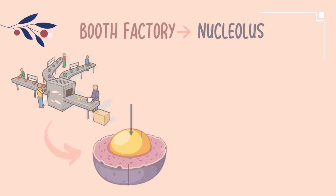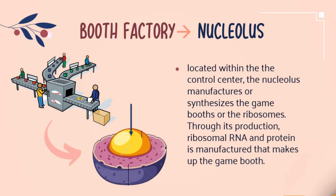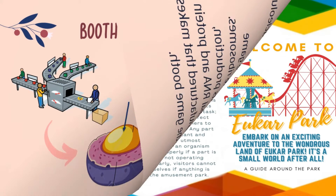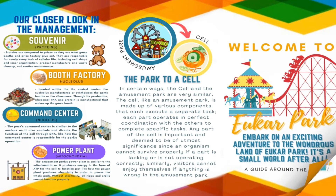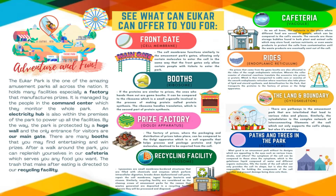In our control center, which is the counterpart of the nucleus, we have another department which makes the booths — the counterpart of ribosomes. This department is the same as the nucleolus. The nucleolus is the part of the cell which manufactures ribosomes. I hope you enjoy the guide we gave you about our park. Enjoy and wonder in this precious Yukar Park — it's a small world after all.